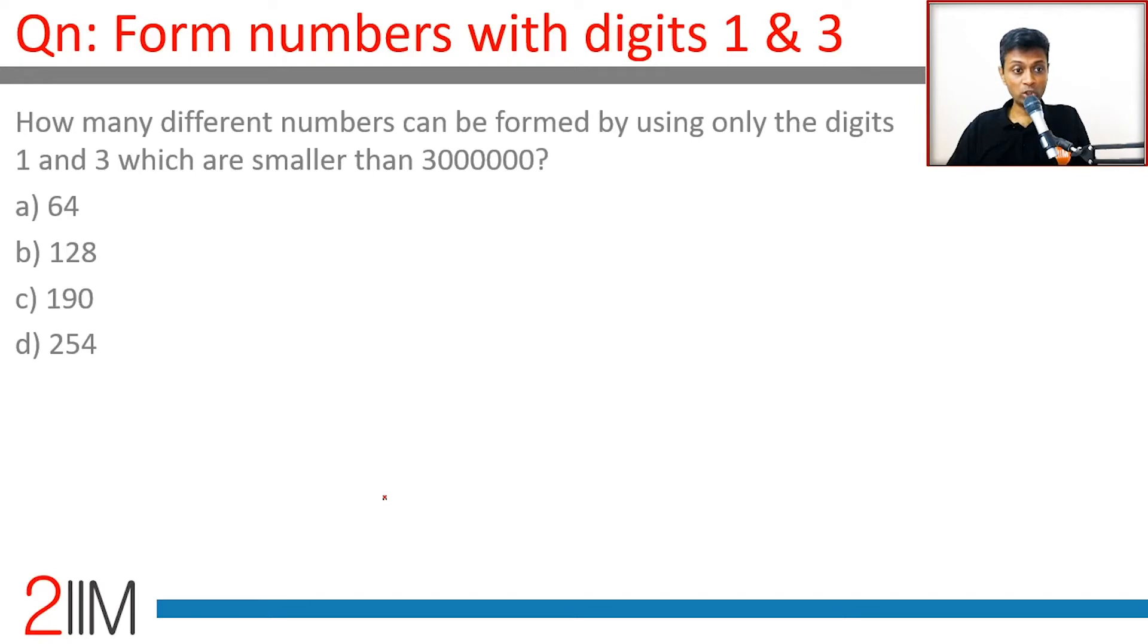How many different numbers can be formed using only the digits 1 and 3 which are smaller than 3 million? So seven digits. First of all, we could have single digit numbers, two digit numbers, three digit numbers.